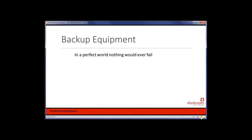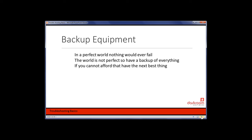In a perfect world, nothing would ever fail, but we don't live in a perfect world, so the next best thing is to have a backup of everything. That may not be practical since some equipment is costly — a top-of-the-line Surface Pro 4 tablet costs $1,200, so having a second one just laying around is cost prohibitive. But sometimes the next best thing is something that can limp you through the job, get the work out, but is less costly.